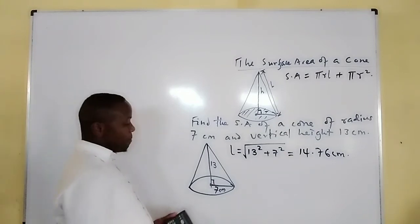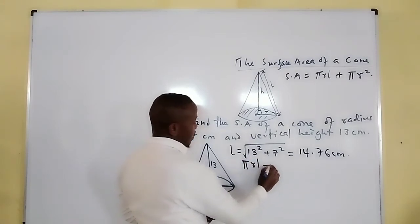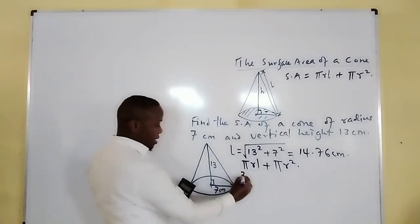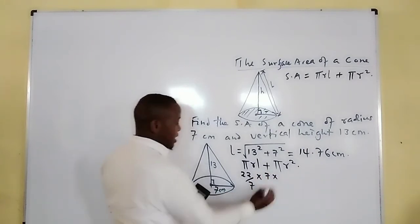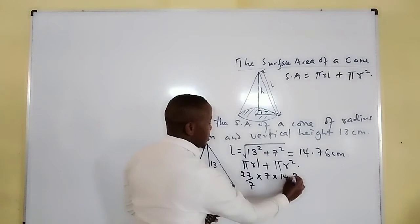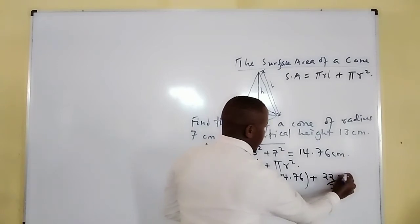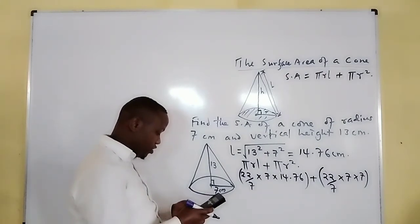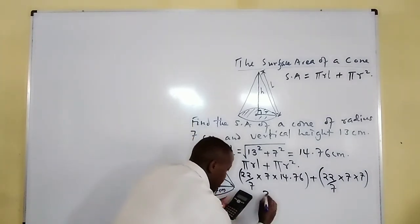So the sloping height is 14.76 centimeters. Now we can proceed to get surface area, whereby we have a curved surface πrl and the base which is circular πr². Therefore we will multiply 22/7 × 7 × 14.76, then we add 22/7 × 7². When you multiply this side, you get 324.72...